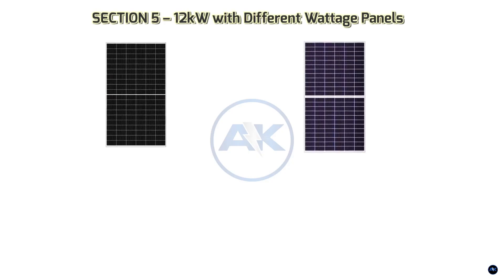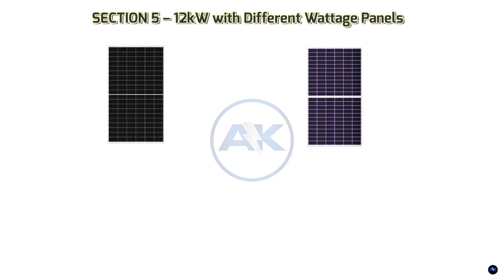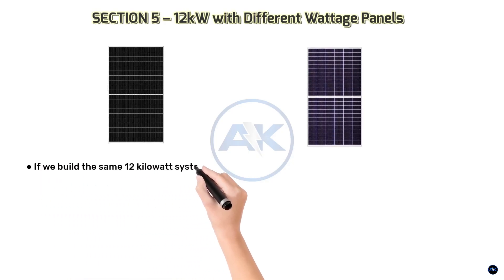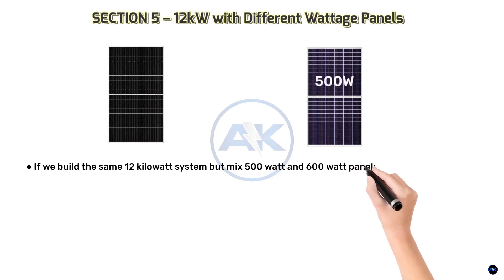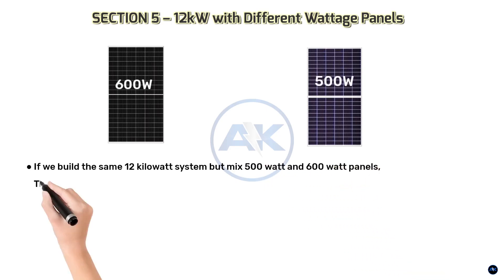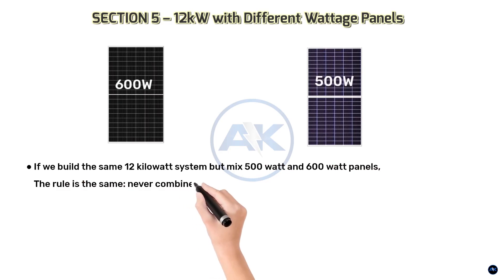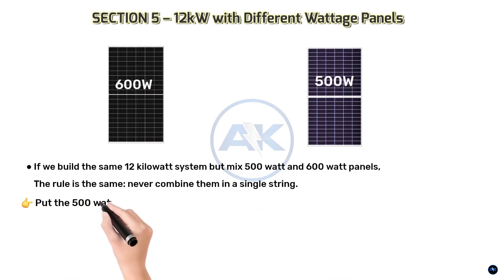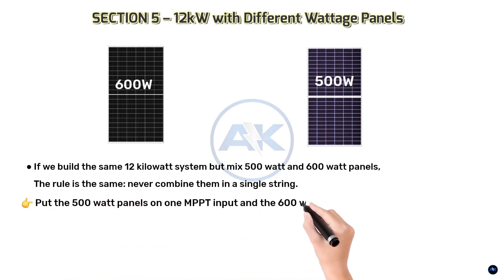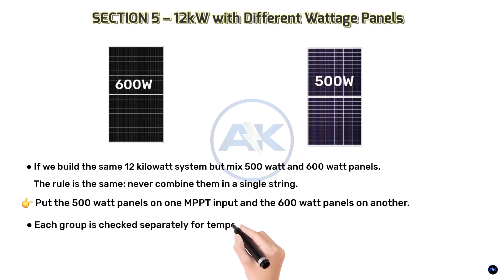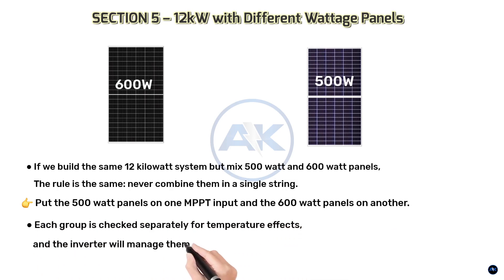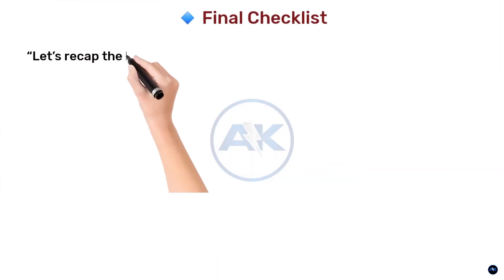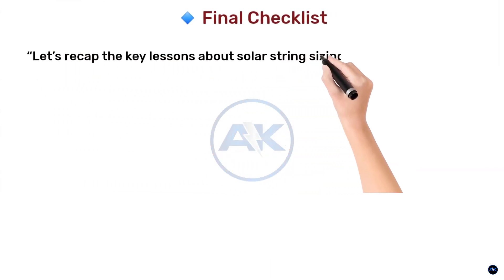Section 5 — 12 kilowatts with different voltage panels. If we build the same 12 kilowatt system but mix 500-watt and 600-watt panels, the rule is the same: never combine them in a single string. Put the 500-watt panels on one MPPT input and the 600-watt panels on another. Each group is checked separately for temperature effects, and the inverter will manage them independently for maximum efficiency.